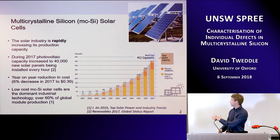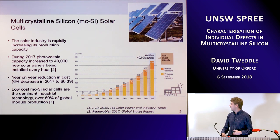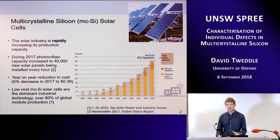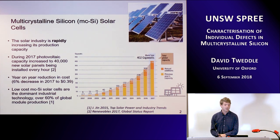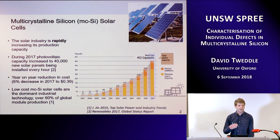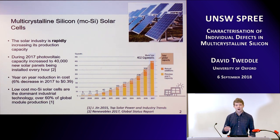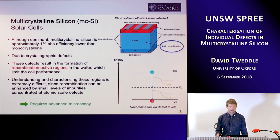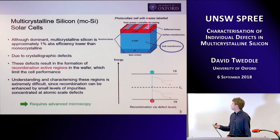I don't really need to convince you all that solar is great, but what's quite nice is this figure showing how much the photovoltaic industry is increasing year on year. It's gone up to around 40,000 new solar panels installed every hour in 2017, and this coincides with a year-on-year cost reduction. At the moment, low-cost multicrystalline silicon solar cells are the dominant industry technology. Although dominant, multicrystalline silicon solar cells have around a 1% absolute efficiency lower than monocrystalline silicon, and this is due to bulk recombination.